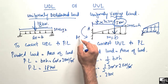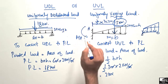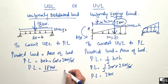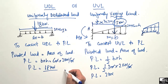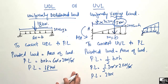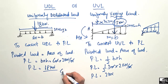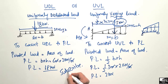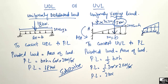Hope you guys understand how to deal with uniformly distributed load and uniformly varying load, and how to convert them into pointed loads. For more civil engineering videos, don't forget to subscribe to our channel. If you have any questions, you can write in the comment section.